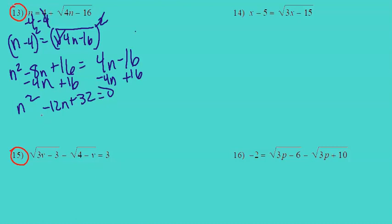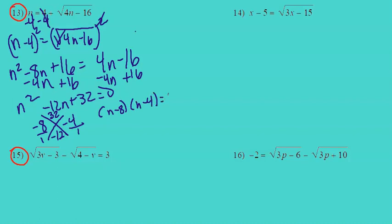So we have n squared minus 12n plus 32 equals 0. Factor this: a times c is 32, b is negative 12. The two numbers that multiply to 32 and add to negative 12 are negative 8 and negative 4. Divide those by a, which is 1, giving n minus 8 times n minus 4 equals 0. So the two solutions are n equals 4 or n equals 8.